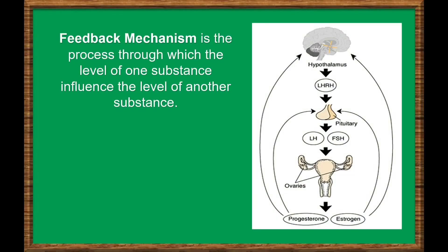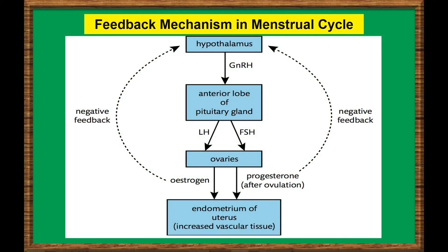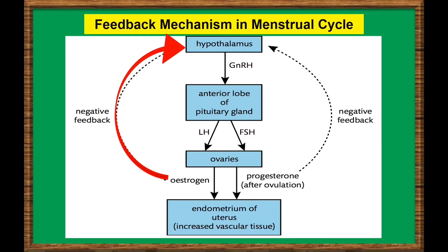Feedback mechanism is the process through which the level of one substance influences the level of another substance. Here's an example of a negative feedback mechanism in the menstrual cycle. The follicle-stimulating hormone, or FSH, stimulates the ovaries to release estrogen. High levels of estrogen then prevent the further production of FSH.